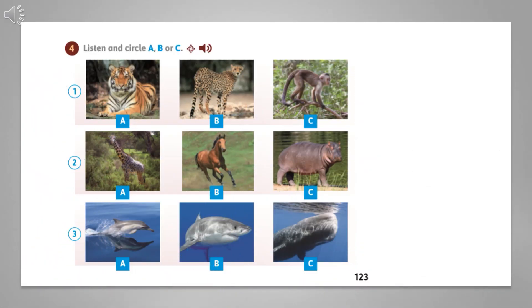You are going to listen and circle A, B, or C. Number one: This animal is stronger than the monkey but smaller than the tiger. It's the fastest animal in the world. Number two: This animal is thinner than the hippo but bigger than the horse. It's the tallest animal in the world. Number three: This animal is bigger than the dolphin and bigger than the shark. It's the biggest sea animal.